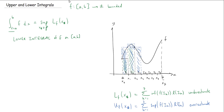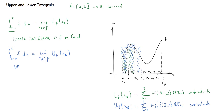If I want to do the upper integral, I write the same notation only with the line on top. Because I'm looking at overestimates I want the smallest of all of them. It may not exist exactly, but I can take the infimum of all the upper sums. So the upper integral is the infimum of all upper sums, and the lower integral is the supremum of all lower sums.